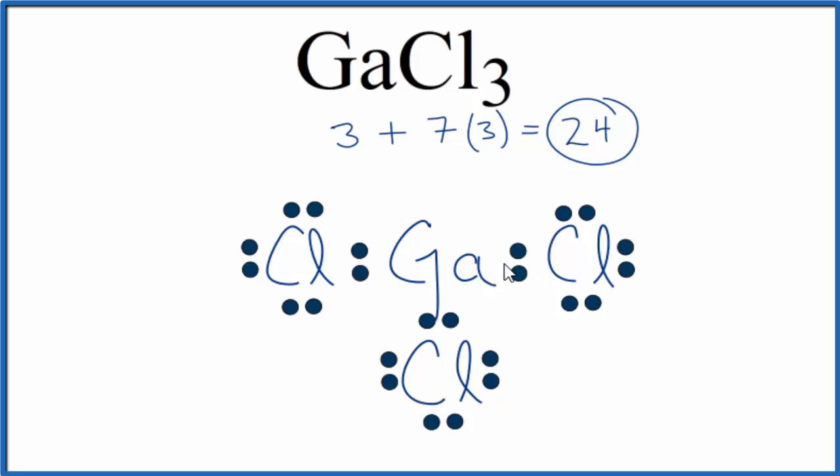The central gallium only has six, but we've used all 24 valence electrons. So we kind of have a problem here. The gallium at the center doesn't have an octet. That's okay, though. Gallium is an exception, like aluminum and boron. It's okay with six valence electrons.